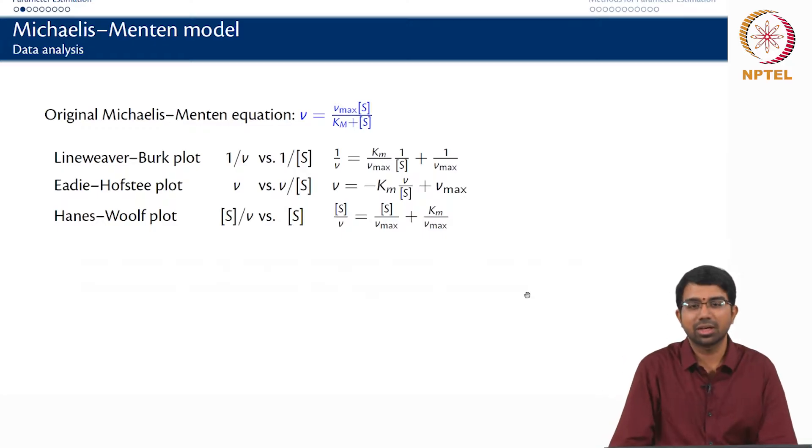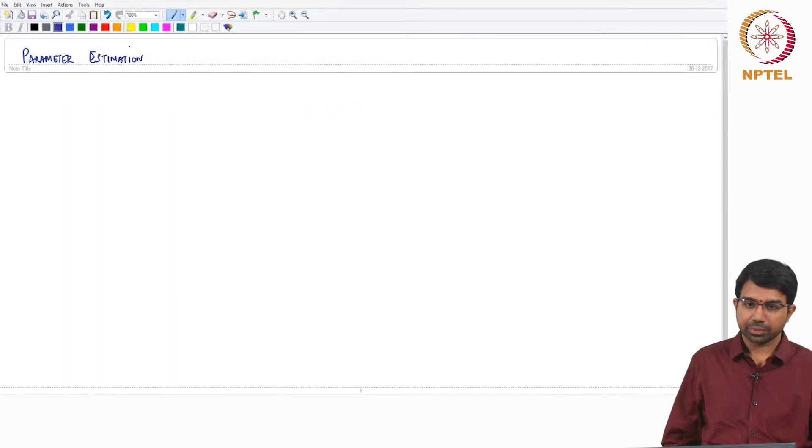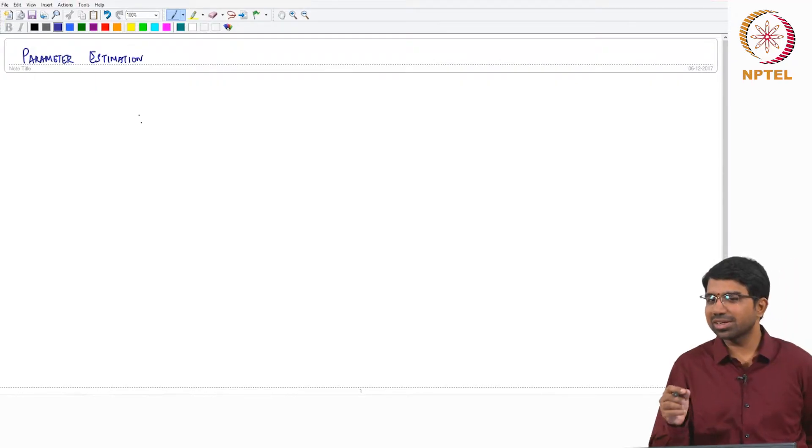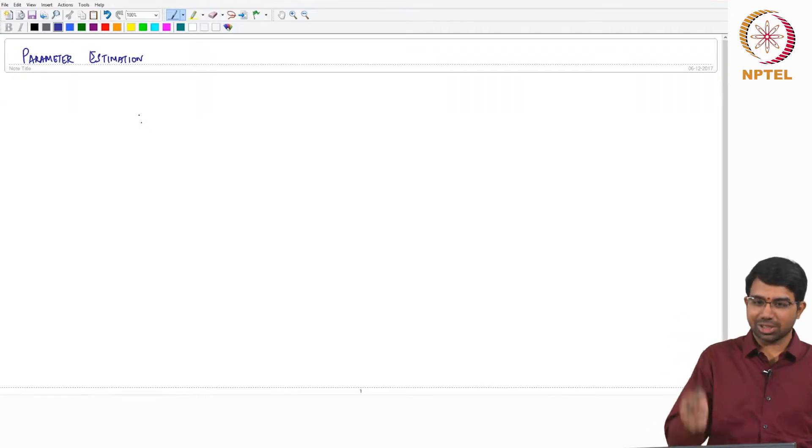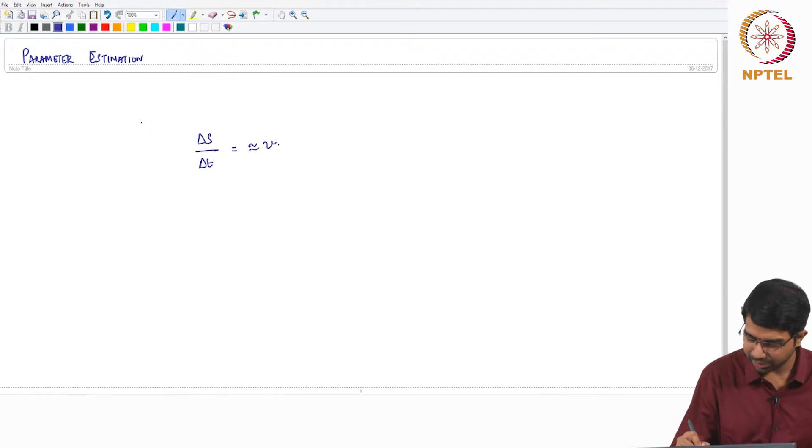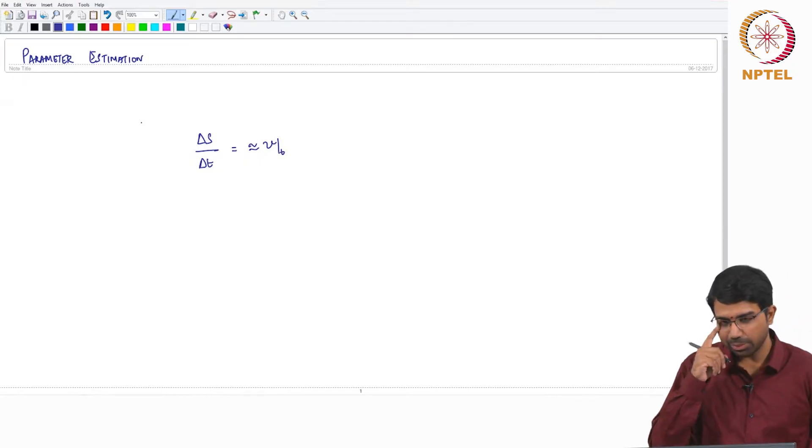I think most of you must have carried out a Michaelis-Menten kind of experiment in the lab. So what would you normally get from that experiment? What is the data that you normally get from a Michaelis-Menten experiment? And how do you do the delta S by delta T? You basically literally stop the reaction by putting it in ice and then you make the measurement and then you compute some delta S by delta T. This will approximately be equal to your V, V at a particular time.